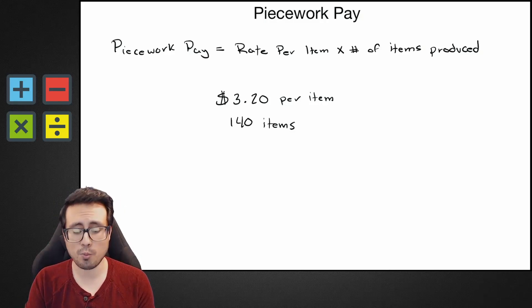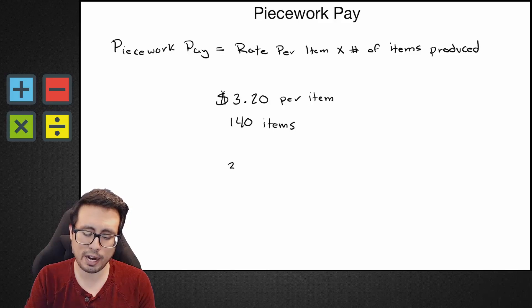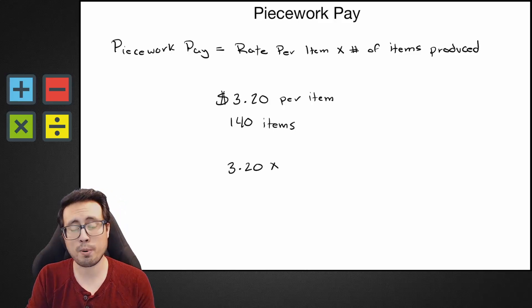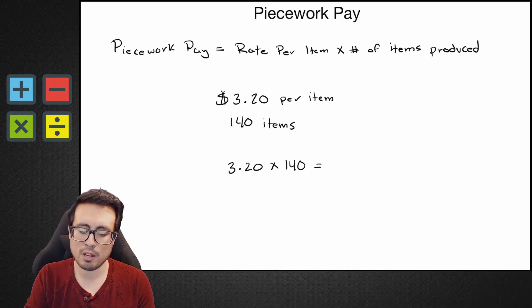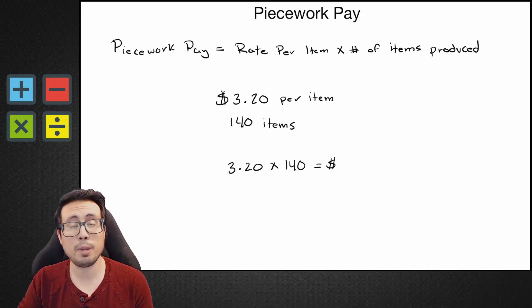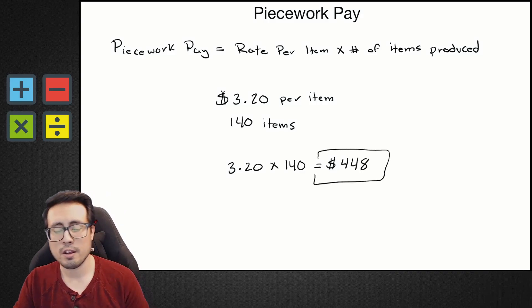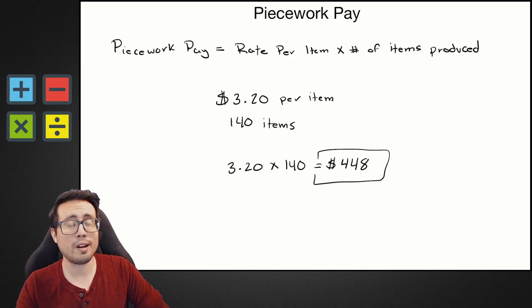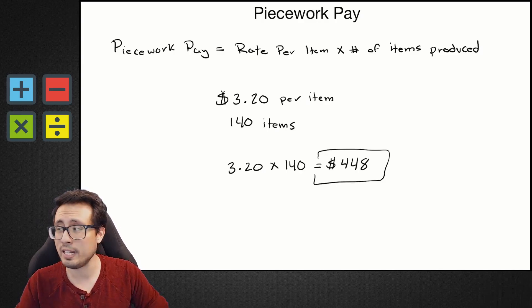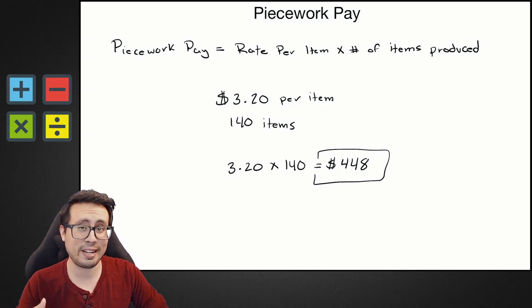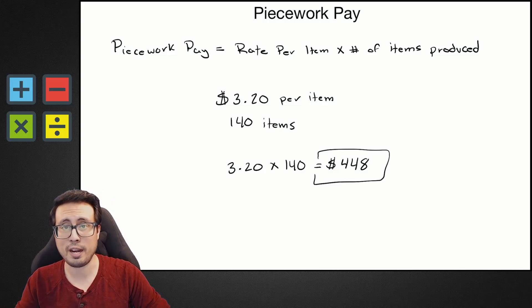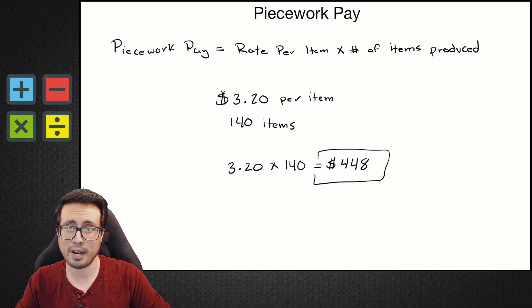I'm going to look at my equation: rate per item is $3.20, times how many did I produce — I produced 140 of them. I multiply these two together and that gives me my piecework pay, which is $448. So in piecework pay we earned $448. Taxes and deductions will get taken out of that, but this is our gross piecework pay: $448.